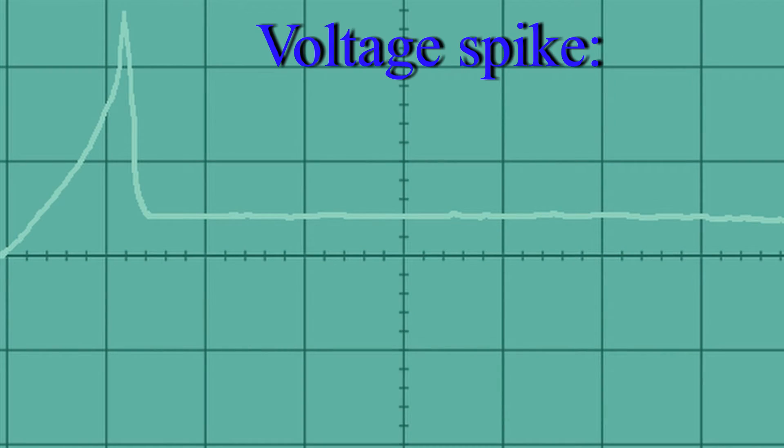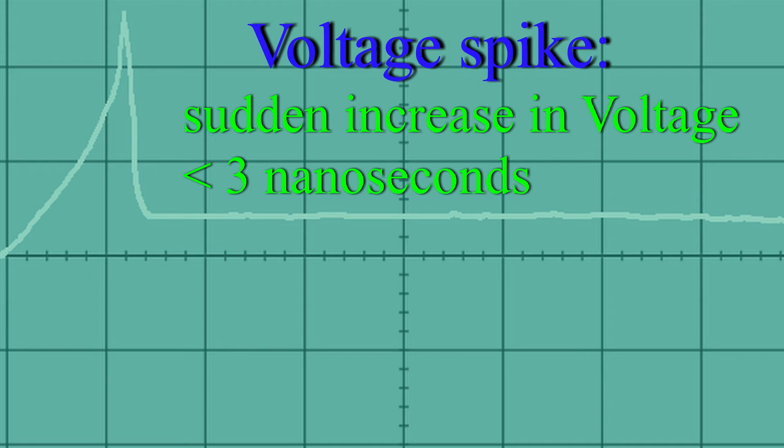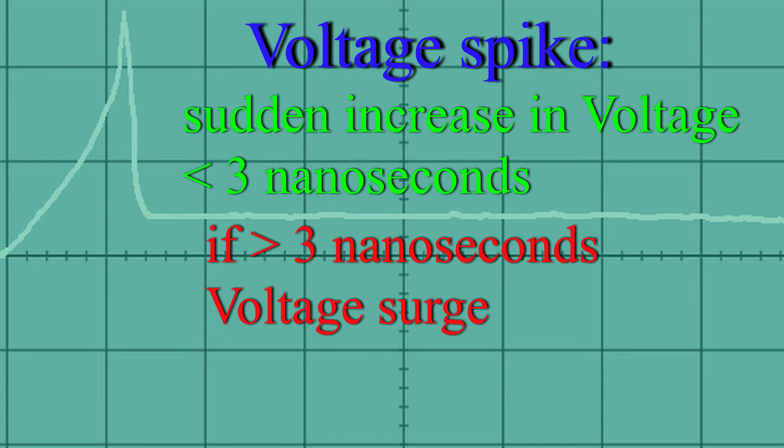Now what is a voltage spike? A voltage spike is a sudden increase in voltage that lasts for less than 3 nanoseconds. If this increase lasts longer than 3 nanoseconds, it's called a voltage surge.